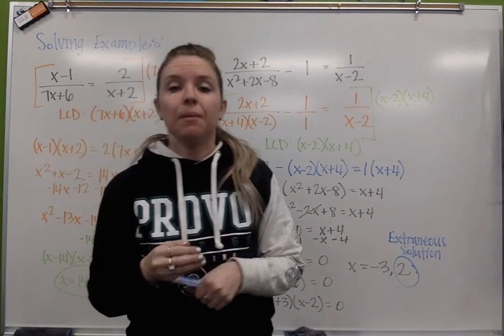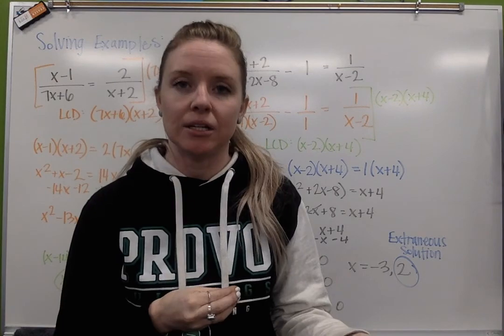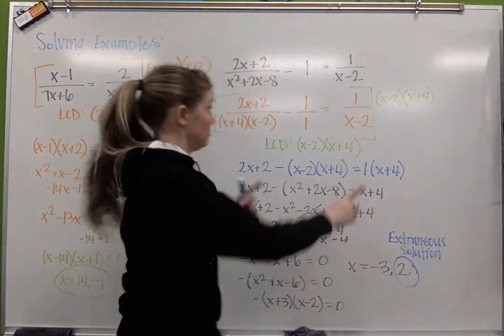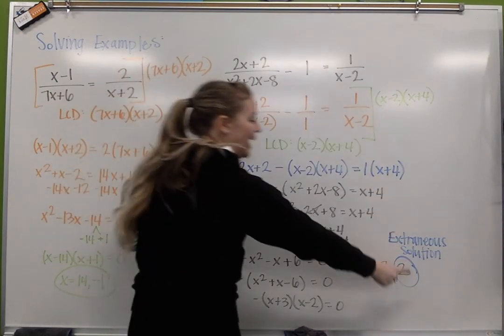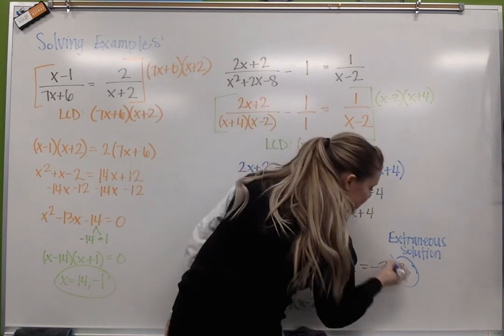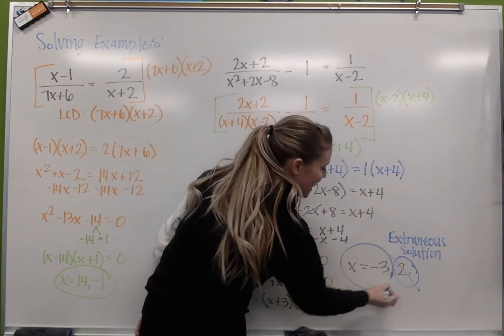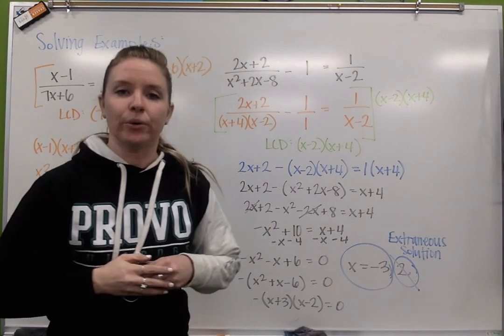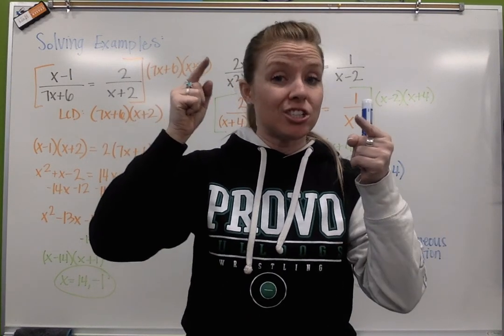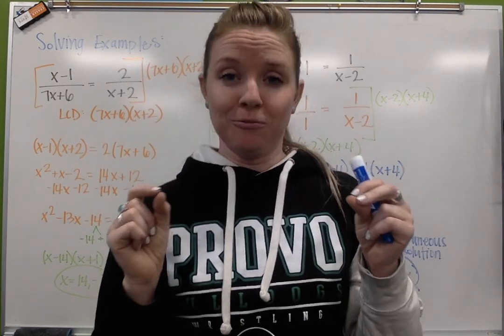2 is an extraneous solution. Algebraically we were able to find it because we canceled out the denominators, but now when we include the denominator in the problem, because it's there, it's right there, see it, boom, I can't plug 2 back in, so it doesn't work. My answer is negative 3. So be very cautious with your extraneous solutions, make sure you're checking for that divide by zero. Good luck.